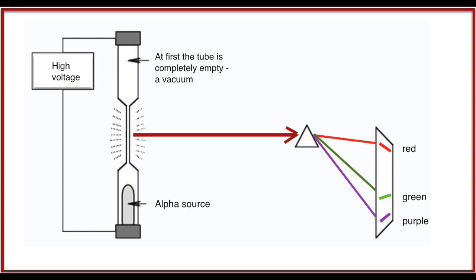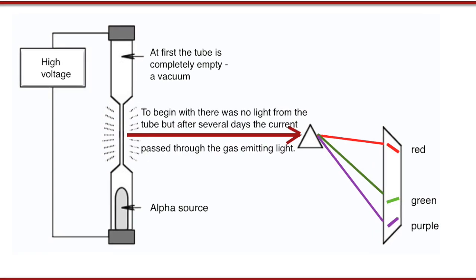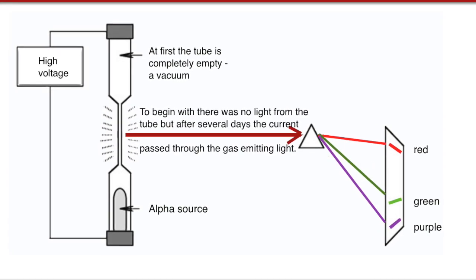This is an outline of an experiment done by Ernest Rutherford to find something out about the nature of alpha particles. He trapped an alpha source within an evacuated tube, and at each end of the tube he attached electrodes which were in turn attached to a very high voltage supply.